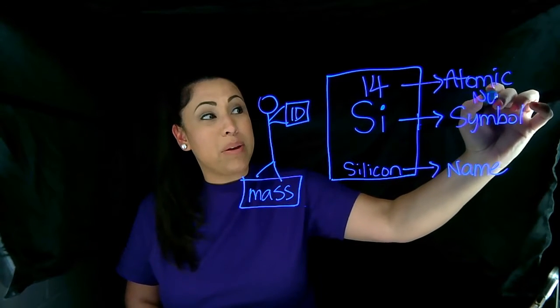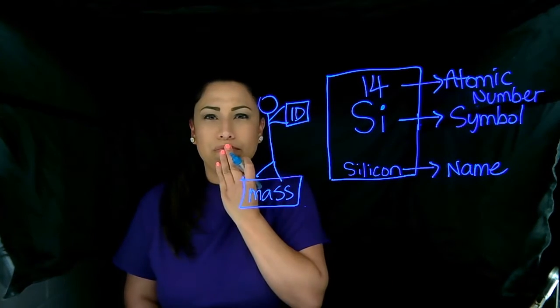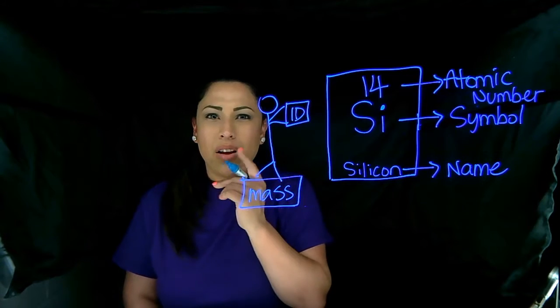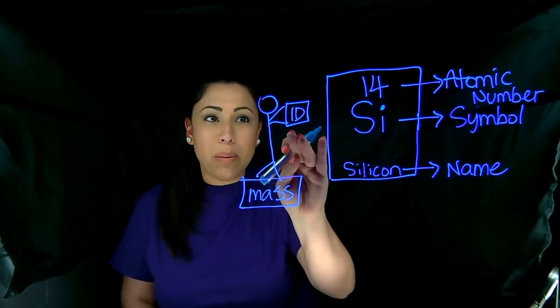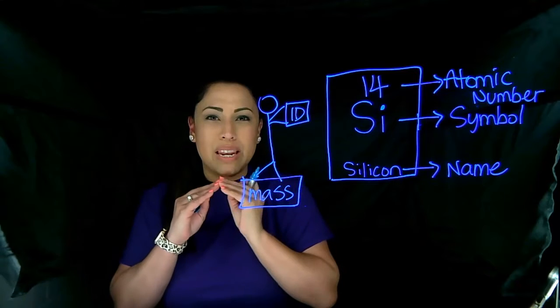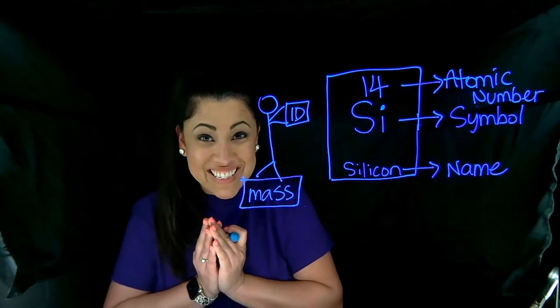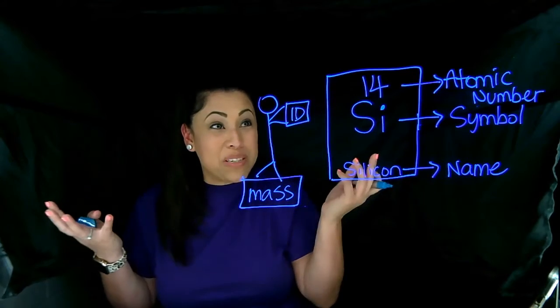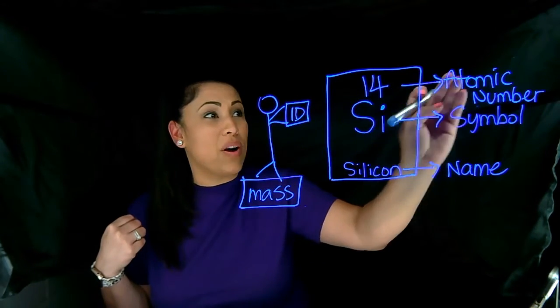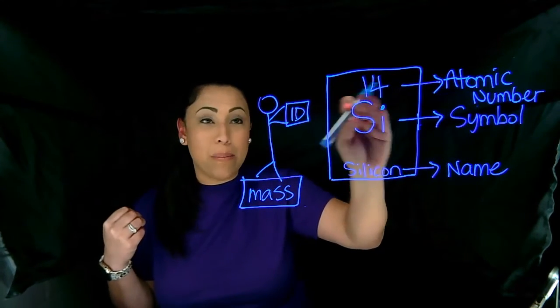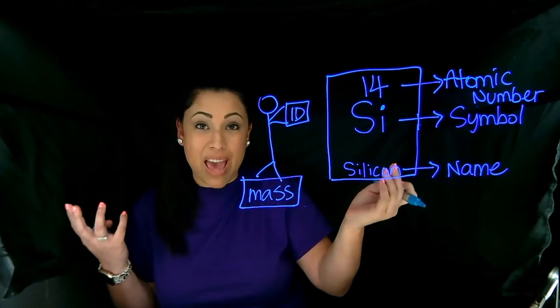Every element has a different atomic number. Our ID. If you watched the last video, you remember our ID is related to one type of subatomic particle. Do you remember what that is? It's going to be our protons. So our atomic number is the same number of protons that silicon has in an atom.